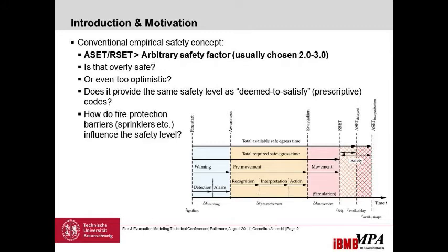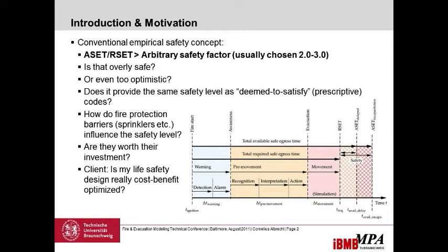We also want to know how fire protection barriers like sprinklers or detection systems influence the safety level. We don't want to just say they do influence it — we want to quantify that influence and answer whether they're worth their investment. They cost a lot of money, so do we get any quantifiable benefit? The client usually asks: is my life safety design really cost-benefit optimized?